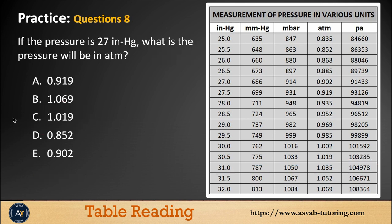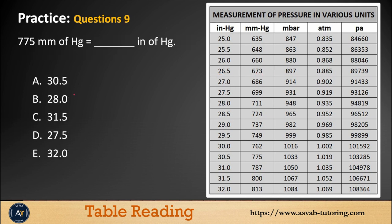Next is question number 8. If the pressure is 27 inch Hg, what is the pressure in ATMs? You have to go to inch Hg 27, you could see here 27, and find the pressure in ATMs right here. Question number 9: 775 mm of Hg, you need to find the value in terms of inch of Hg. Try by yourself and see which one you get.